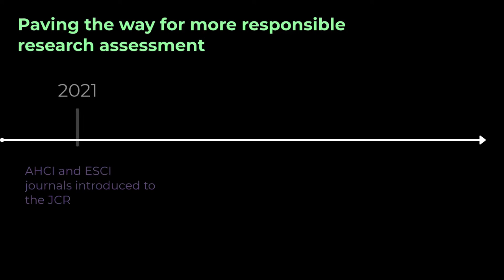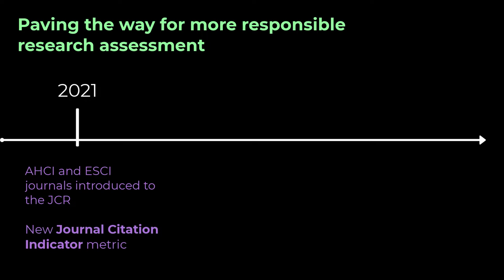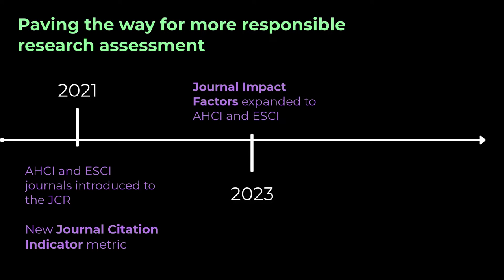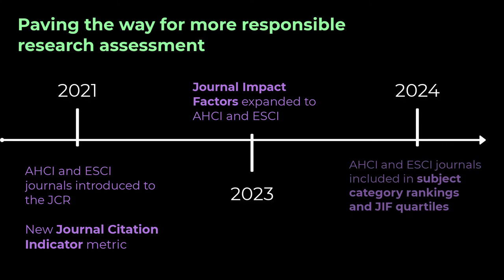This is the latest in a series of improvements designed to pave the way for more responsible research assessment. In 2021, Clarivate first introduced Arts and Humanities and Emerging Sources Citation Index journals into the JCR, while also introducing a new normalized journal citation indicator value. Each AHCI and ESCI journal received a journal citation indicator value and additional descriptive metrics. In this 2023 release, these journals will now also have a journal impact factor. And in next year's 2024 release, these journals will be fully included in Subject Category Rankings and JIF quartiles.